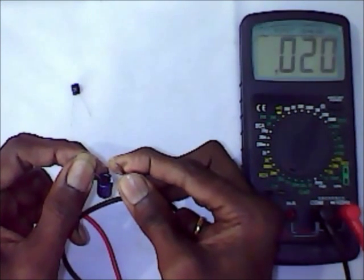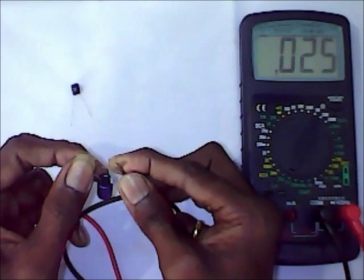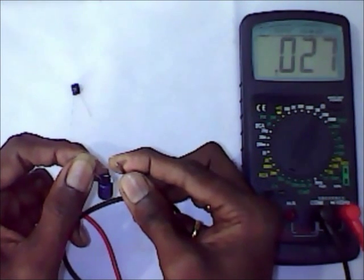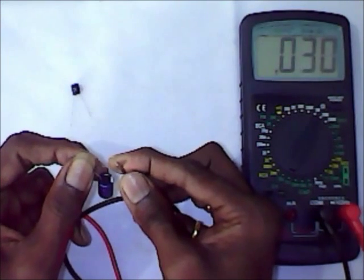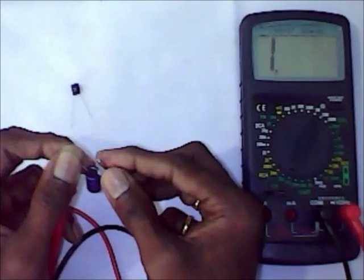See, the multimeter is giving you certain deflection and it is changing constantly. As it is changing, it is indicating that the capacitor is being charged through the internal battery of the multimeter device.